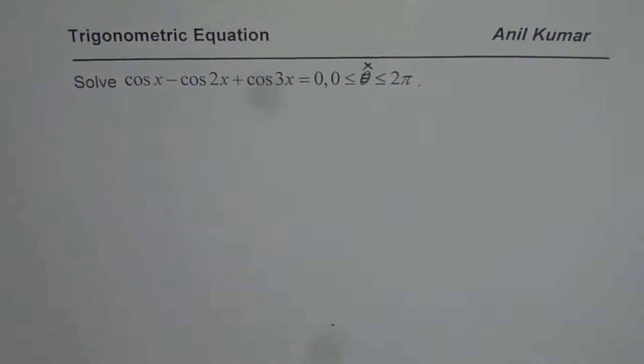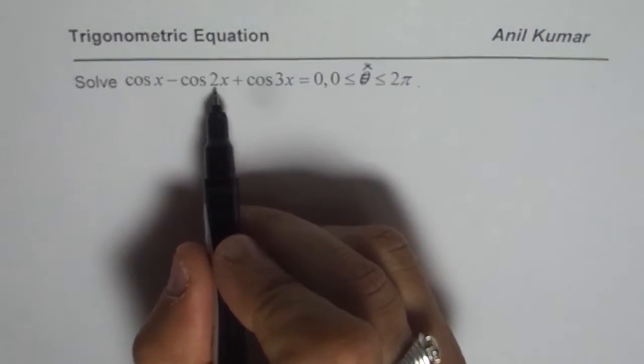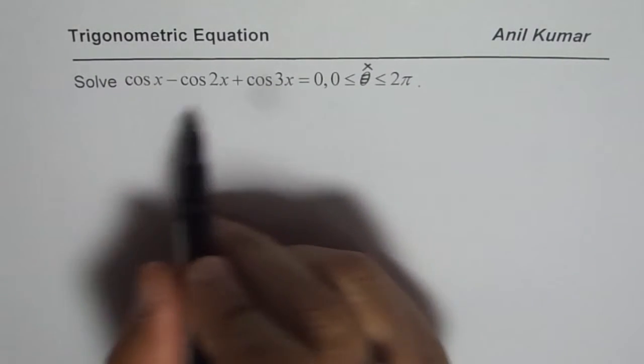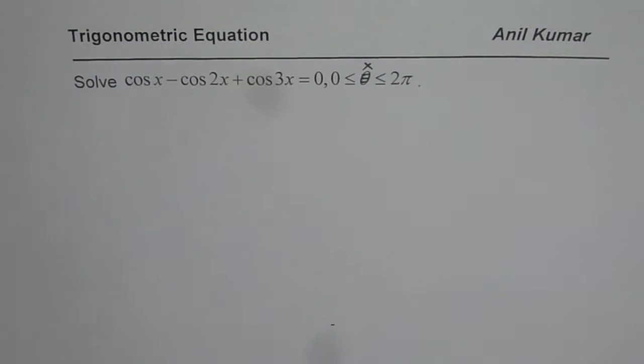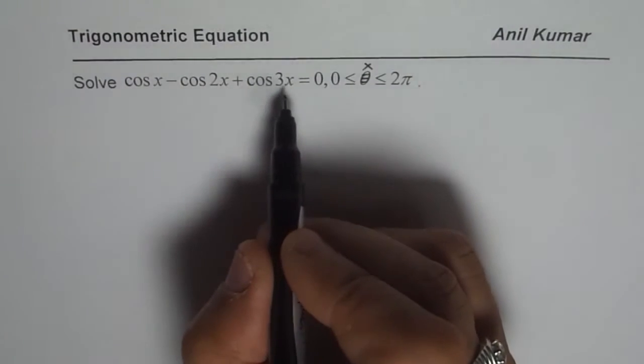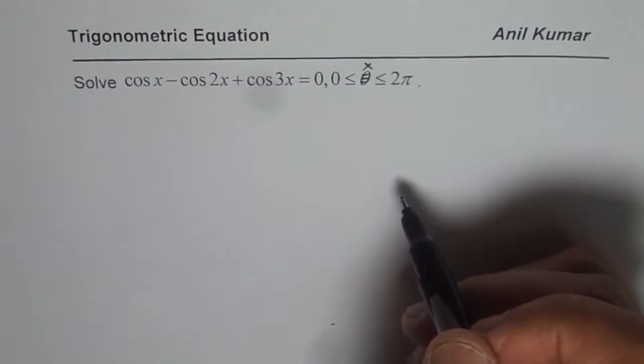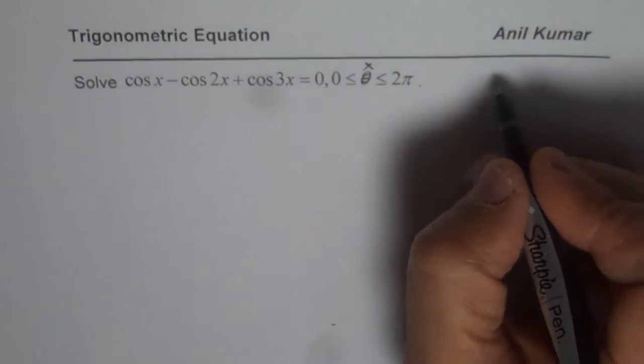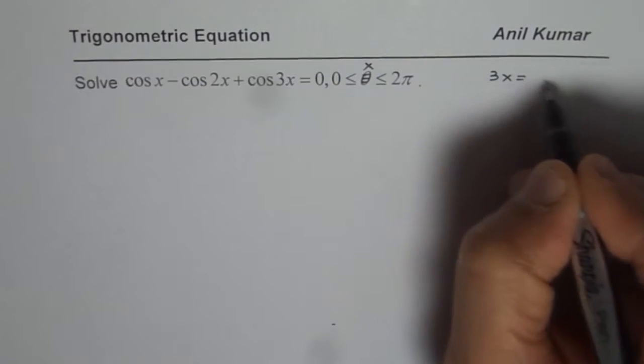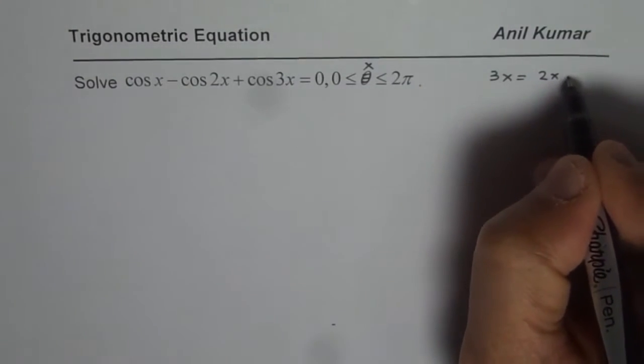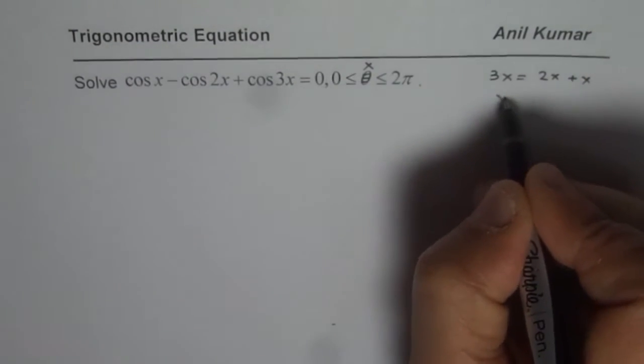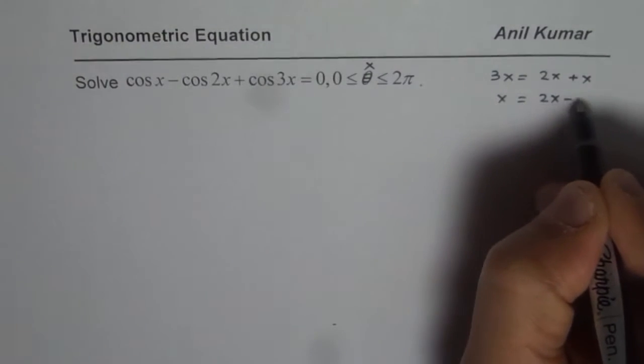One way is we could write 3x and 2x in terms of x, get one equation in terms of cos x and solve it. But that is going to be extremely complicated. The other way is we can use compound angle formulas. We could write 3x as sum of 2x and x and we can write x as difference of 2x and x.